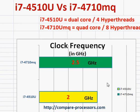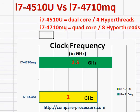Let's compare Intel's Haswell processors: the i7-4510U and i7-4710MQ. The most important difference is the i7-4510U is a dual-core, while the i7-4710MQ is a quad-core processor. Just because the processor's number of cores doubles, you can expect at least double the performance.